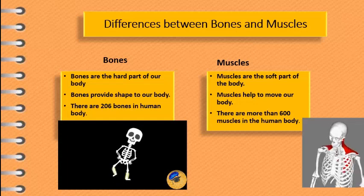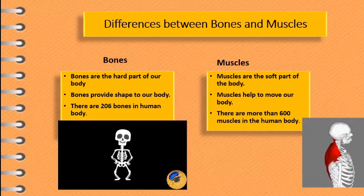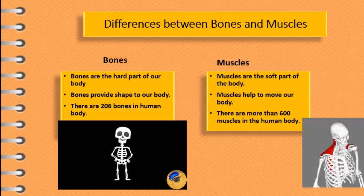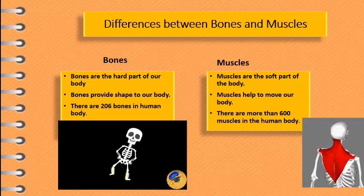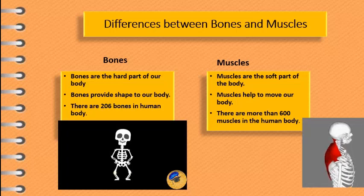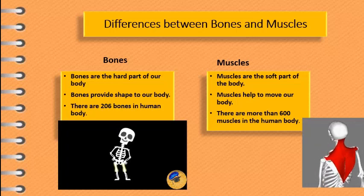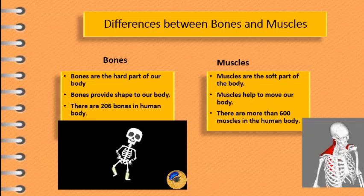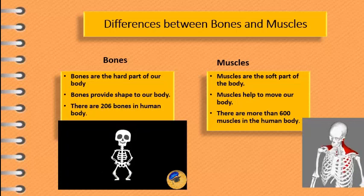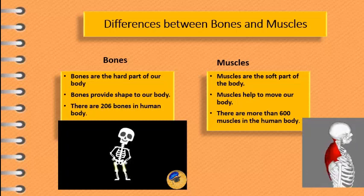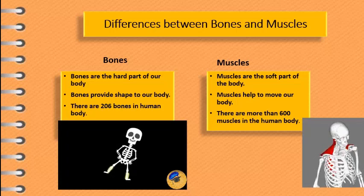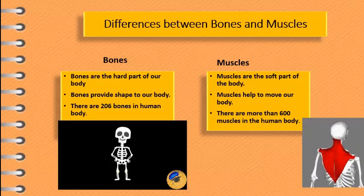What are the differences between bones and muscles? Bones are the hard part of our body — they provide shape, and there are 206 bones in the human body. Muscles are the soft part of our body — they help move our body, and there are more than 600 muscles in the human body. These bones and muscles work together, which is why we are able to move our body.